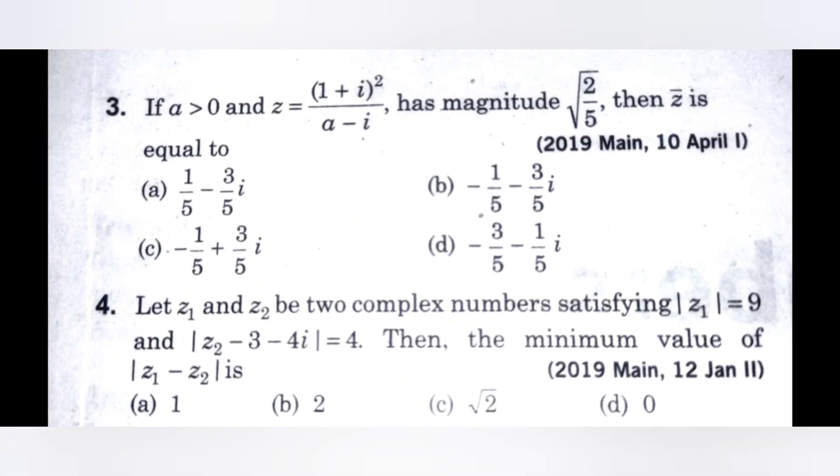Next question. If A greater than 0 and Z equals 1 plus i whole squared divided by A minus i has magnitude square root of 2 by 5, then Z bar equals.